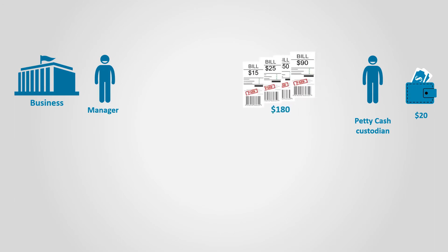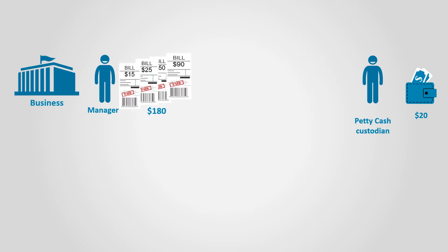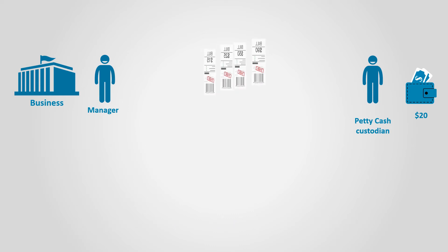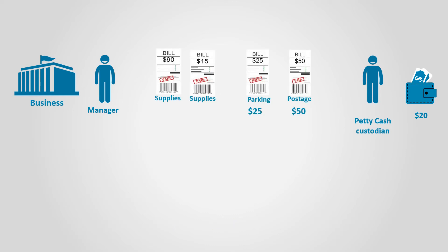The Petty Cash custodian presents all the receipts to the manager, who approves them after checking that the total receipts plus the cash remaining with the custodian matches the Petty Cash Fund's original balance. In this case, they should be equal to $200. The accountant will record all the transactions related to the receipts and release the equivalent amount to the custodian by check.